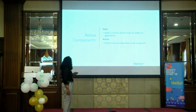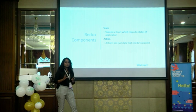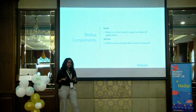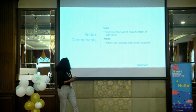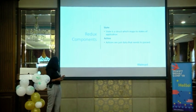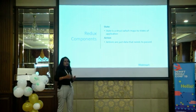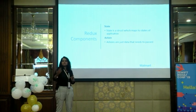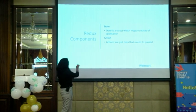Let me start with the components in Redux. First, there's a state — a struct which maps onto a certain state of your app. For example, in a light bulb app, your states are going to be on and off. The next component is called an action. An action is a structure that tells what needs to be done — when a certain action is done by the user or some internal component, what state change has to happen. That is stored in a structure called an action.